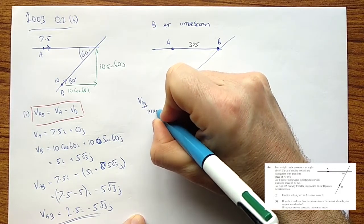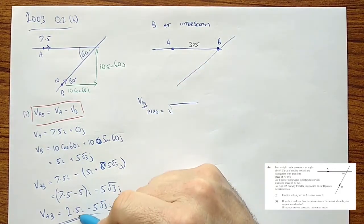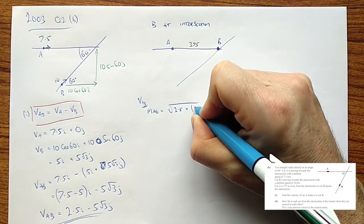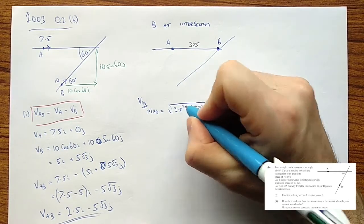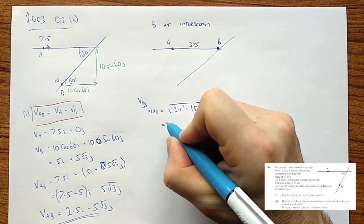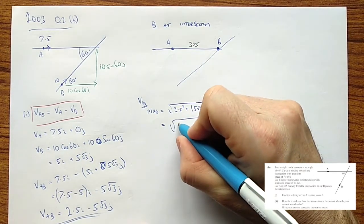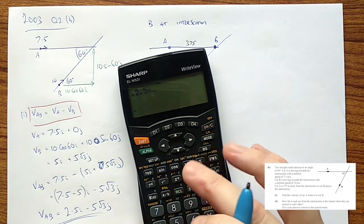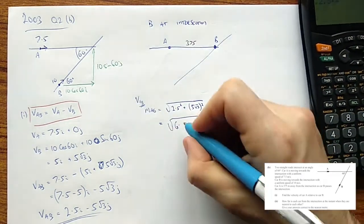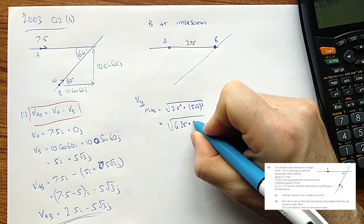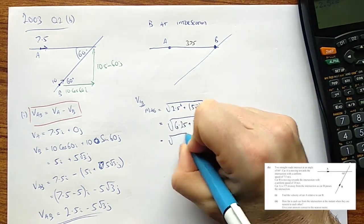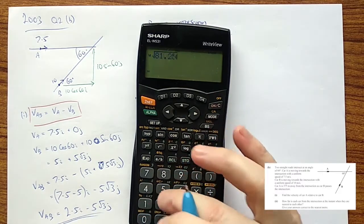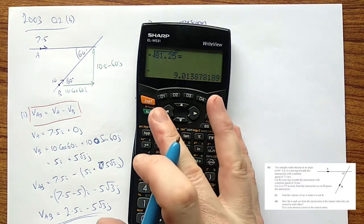The magnitude of it is the square root of each of the components. 2.5 plus 5 root 3. Put in brackets so we don't end up making a little bit of a mistake there. And that, if we work this all out, is going to be 6 point... Of course, let's work this out carefully. 2.5 square root is 6.25. And that is actually going to be 75. So, that is the square root of 81.25 which equals 9.01.